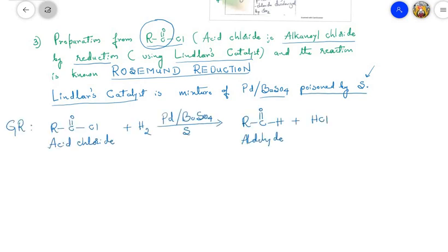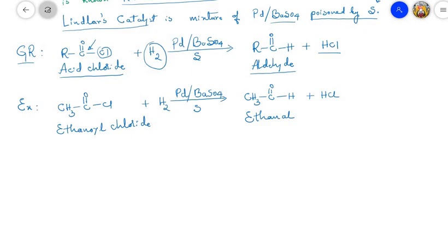In the general reaction, an acid chloride R–C(=O)–Cl is reduced with H₂ using Lindlar's catalyst. One hydrogen is added to the C=O group and the other hydrogen combines with –Cl, which is eliminated as HCl, giving an aldehyde. For example, ethanoyl chloride (acetyl chloride, CH₃COCl) under Rosenmund reduction gives acetaldehyde (ethanal), with HCl as a byproduct.